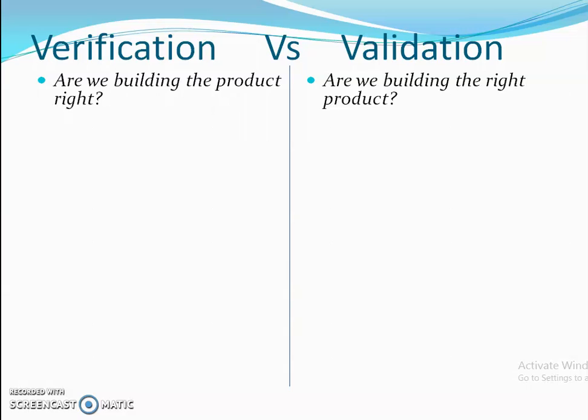When I say this to the electrician, he knows everything about how to establish the connection — which one is the positive wire and which one is the negative wire, and whether it should be from left to right. He knows. I told him I want the fan on the first switch. So he will decide from left to right or right to left. He gets all the details and goes to fix the board. This is known as verification — the product is right.